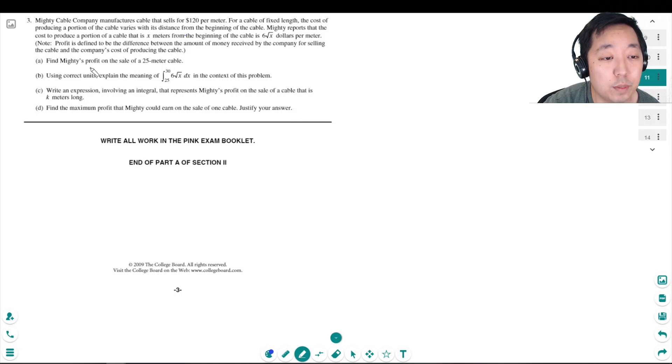Find Mighty's profit on the sale of a 25 meter cable. Okay, so they sell it for $120 per meter, so the profit is always revenue minus cost. The revenue, how much did they earn for this, they sell this for 120 times 25, and that's $3,000.